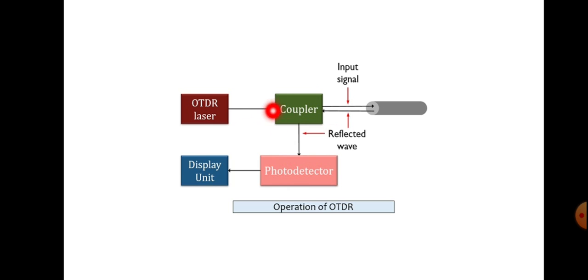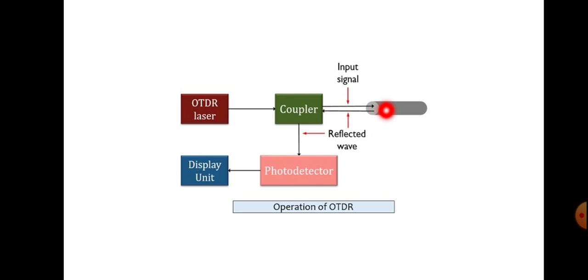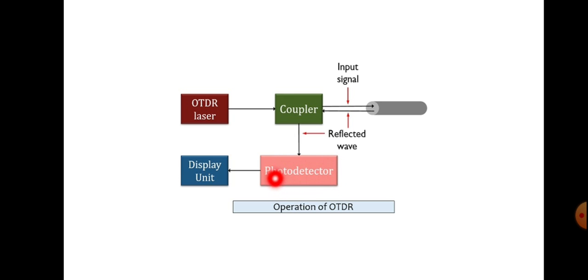Here we use a coupler to couple the signals from the laser source to the optical fiber. The connection is made to one end of the fiber, because in practical cases with an installed fiber, we will not have two ends accessible. The reflected signal is detected by a photodetector connected to the coupler, which measures the signal level of the reflected light and converts it to a suitable electrical level, though the signal may be at a smaller level.